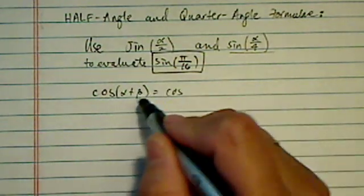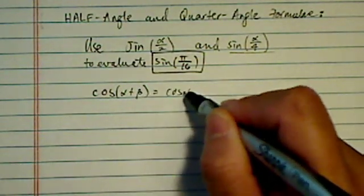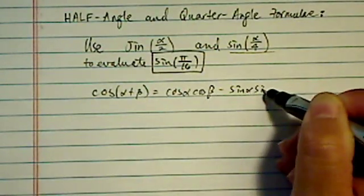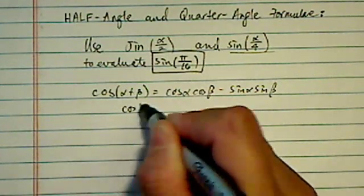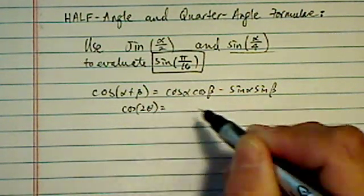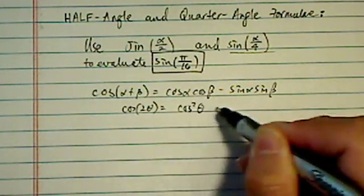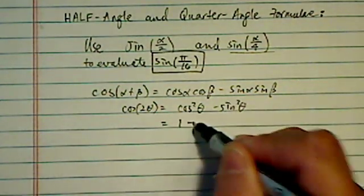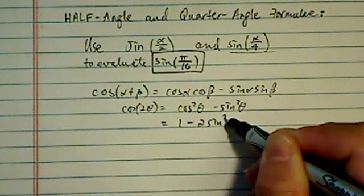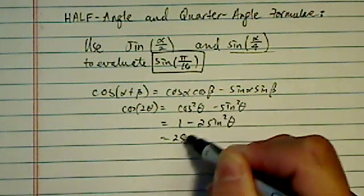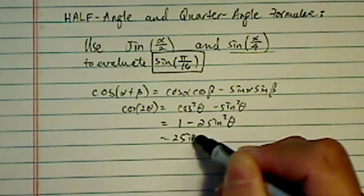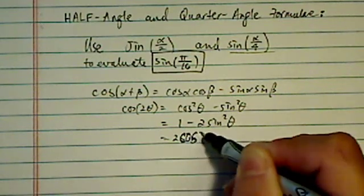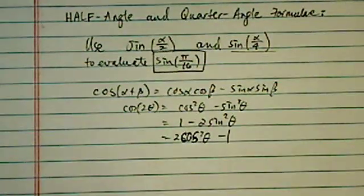Cosine of α plus β equals cosine α cosine β minus sine α sine β. And when α equals β, then we'll have cosine of 2θ equals cosine squared θ minus sine squared θ. From here, I have two expressions: 1 minus sine squared θ, or—my apology—2 cosine squared θ minus 1.